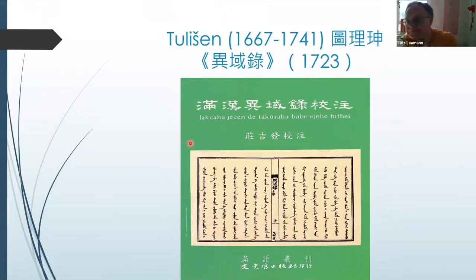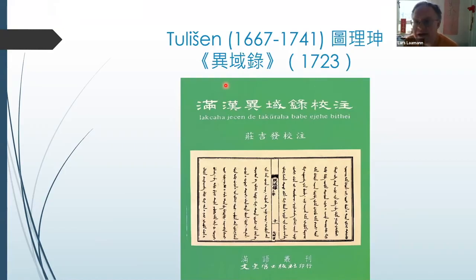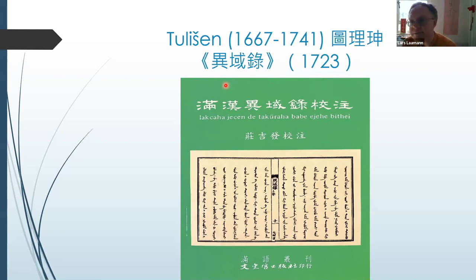Tulišen — has anyone heard of Tulišen? He is a Manchu official who travels for the Qing westwards, through the western parts of the Qing Empire and into surrounding kingdoms, also Russia. In other words, he's a traveling emissary of the Qing. He writes a very important work which gives us a detailed impression of the populations inhabiting Central Asia and the West at this stage.